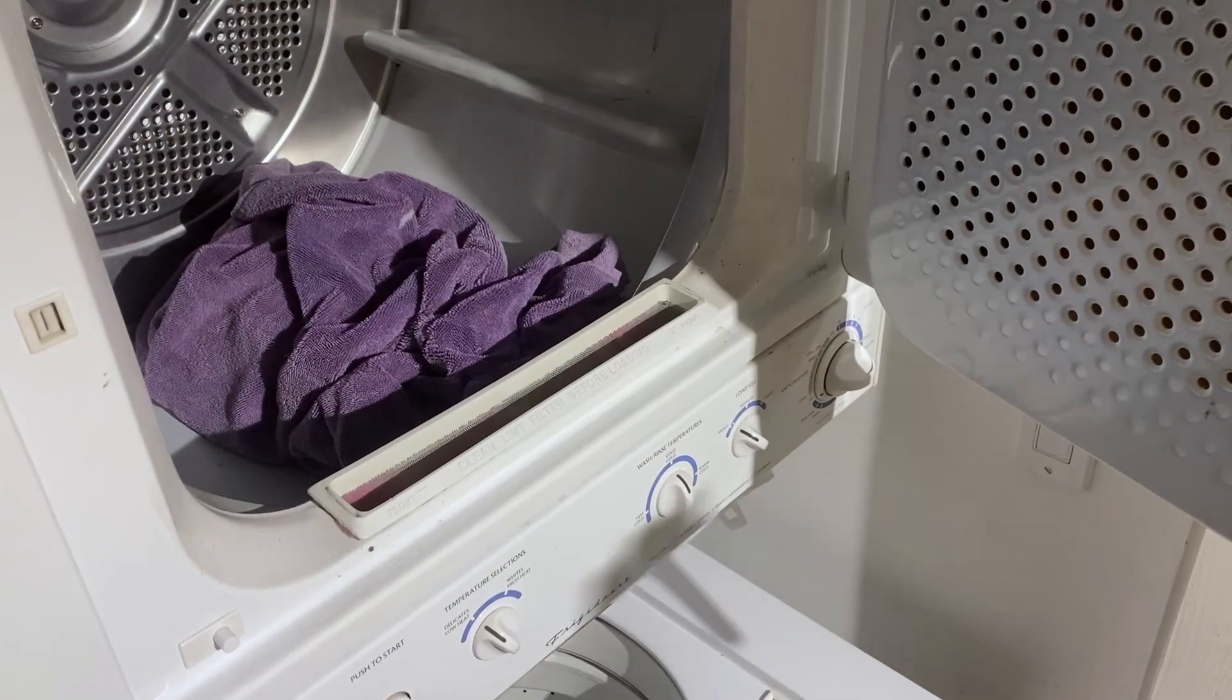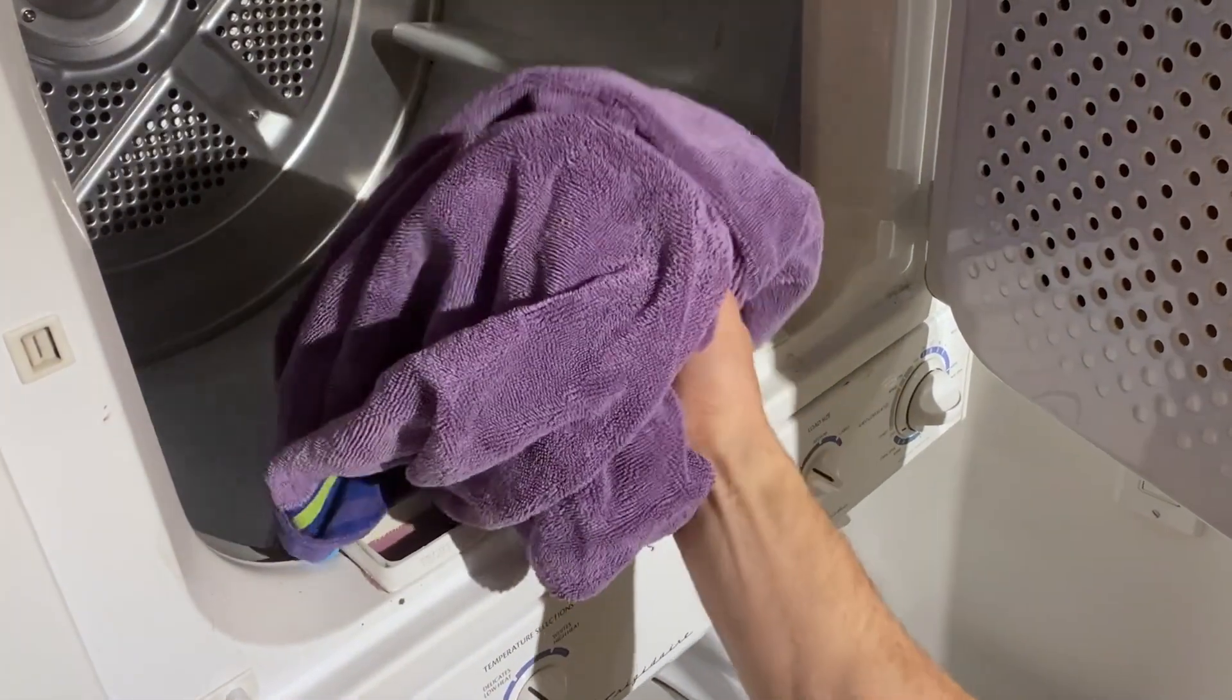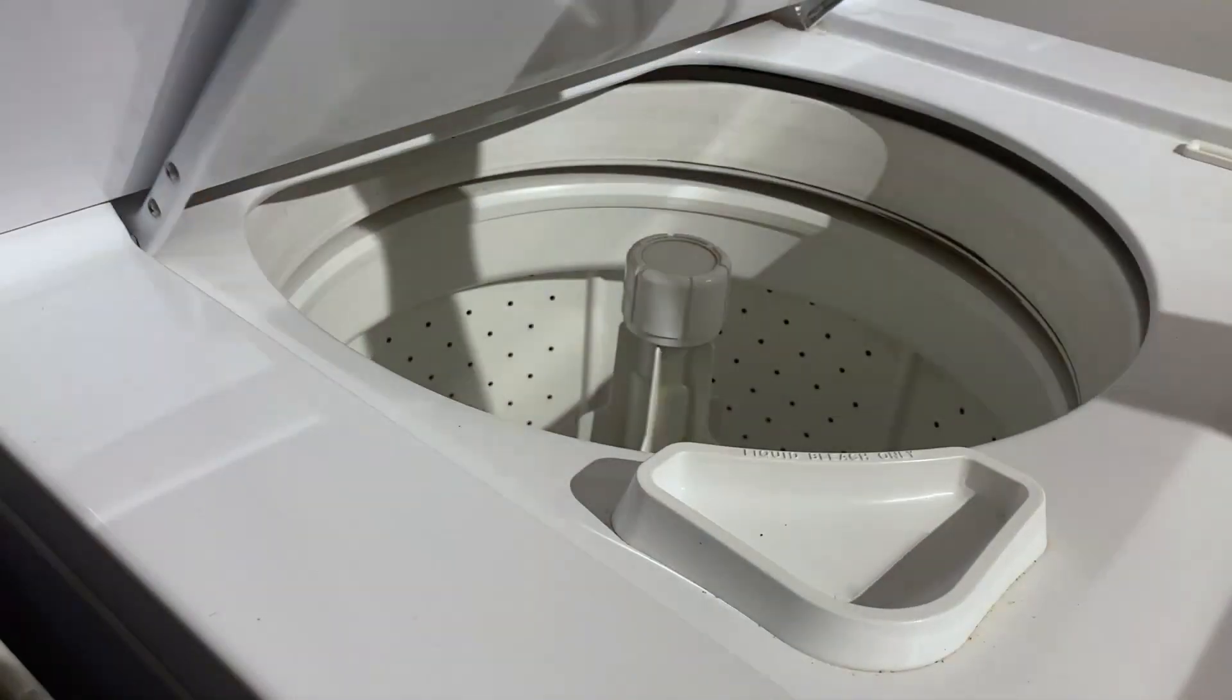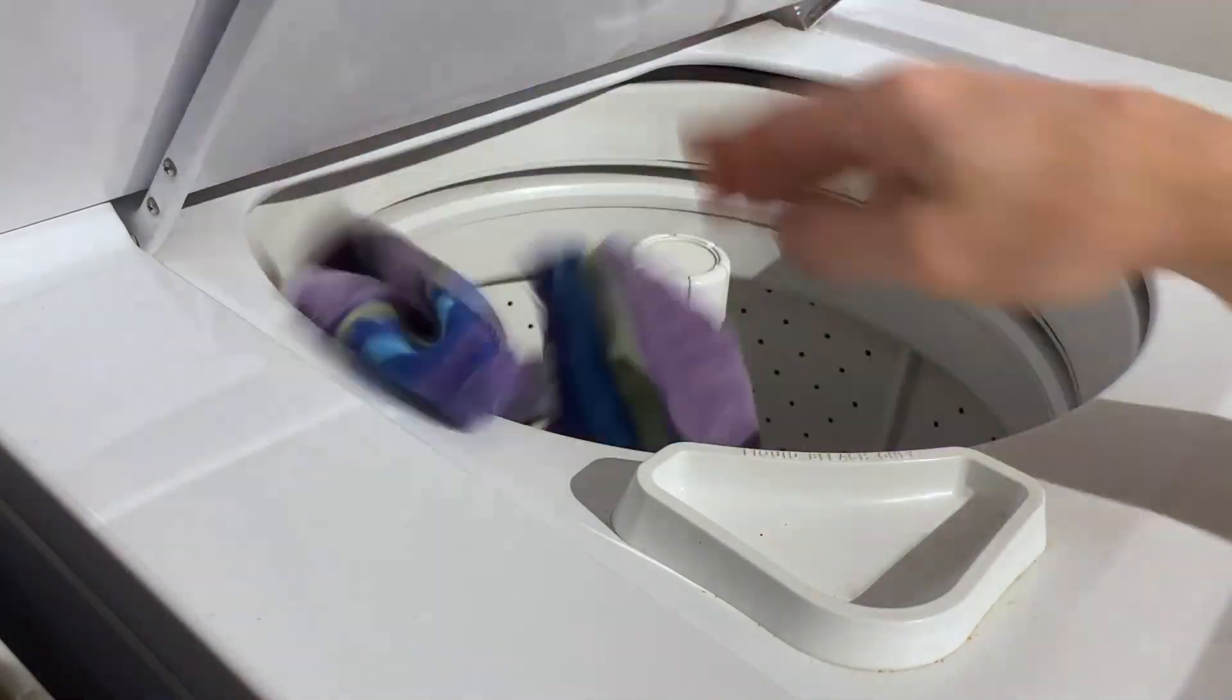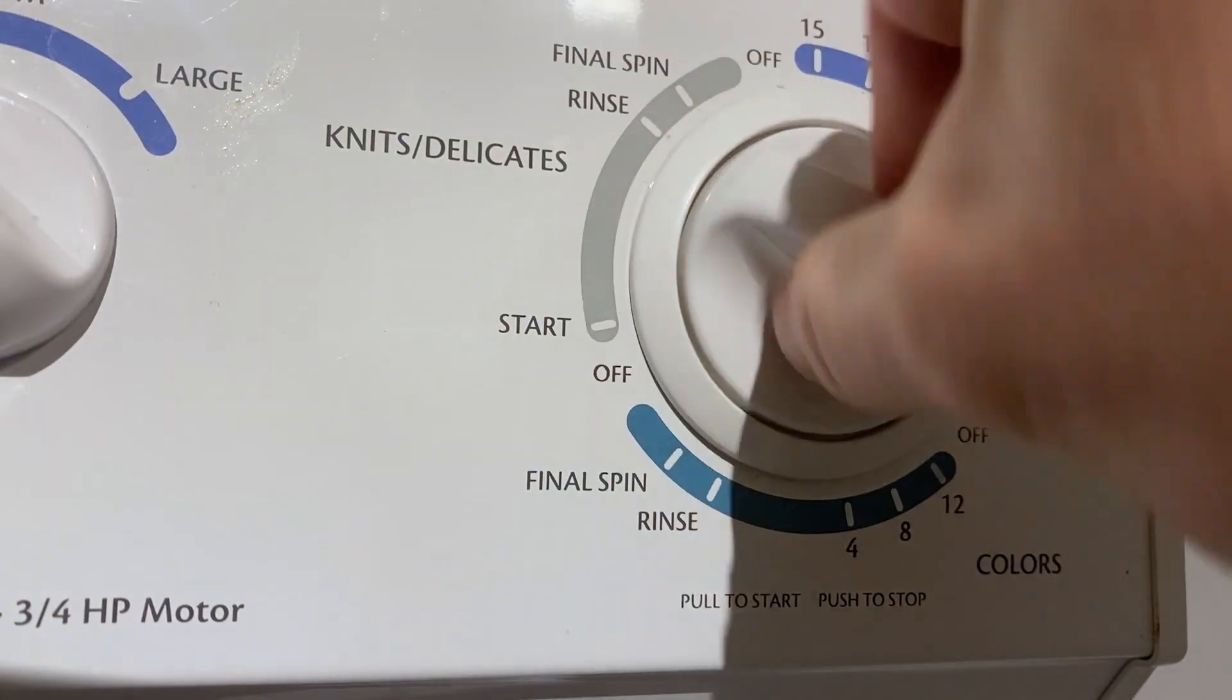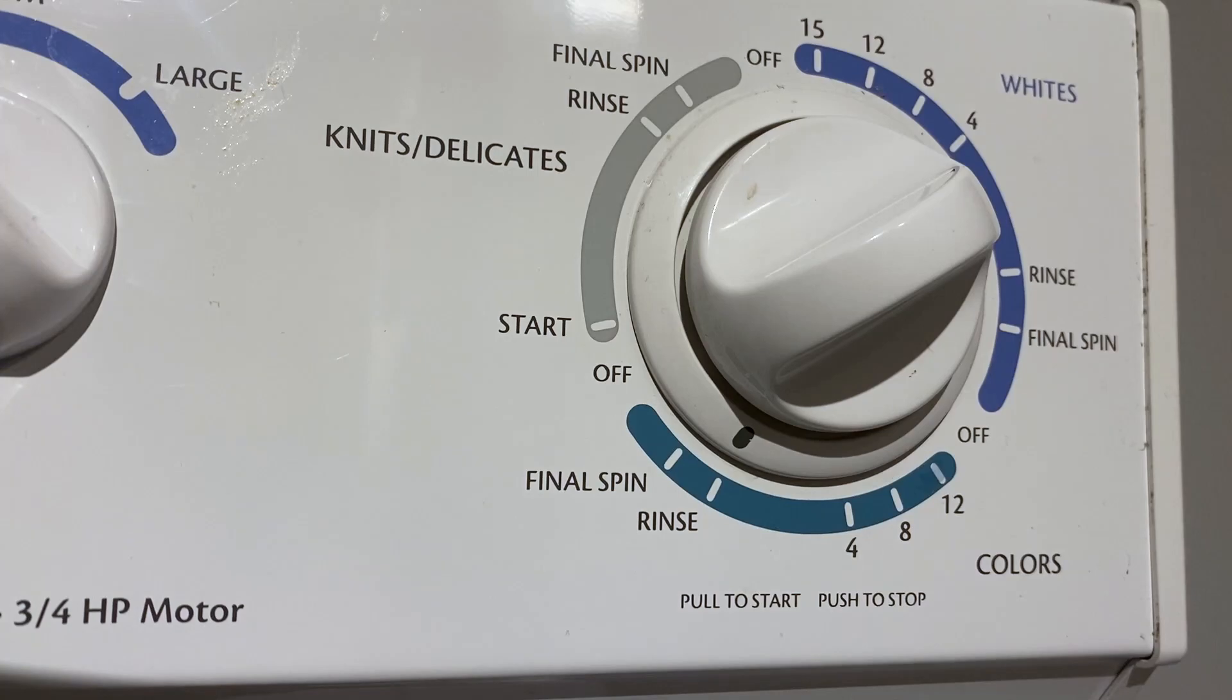Let's check the towel. Alright, it's still damp. Clearly 30 minutes wasn't long enough for one towel. Let's run this through a rinse and spin cycle again so we can run that exact same test but this time in auto dry mode.